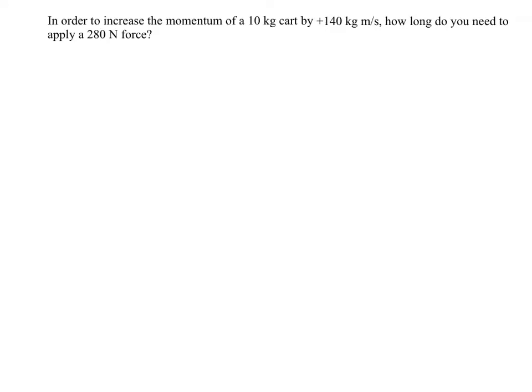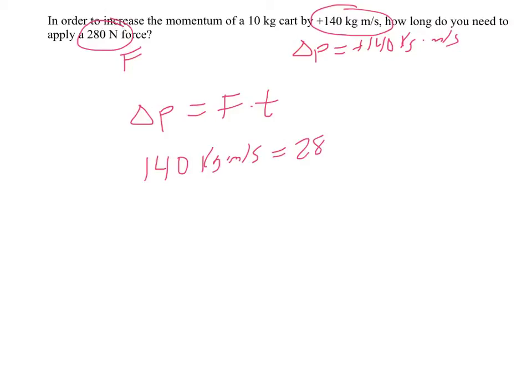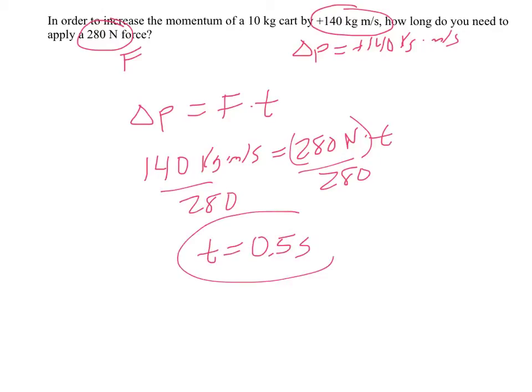All right. So here's a cart, and I want to increase its momentum by 140. So delta P equals 140 kilogram meters per second. And I have a force of 280 newtons. That's my force. So I want to know how long I have to push it for. So delta P equals force times time. So I want to change it by 140 kilogram meters per second. And I have a force of 280 newtons. So if I divide both sides by 280, I get the time I need to push it is half a second. So pushing for half a second at a force of 280 gives me a change of 140.